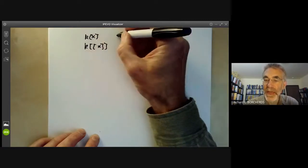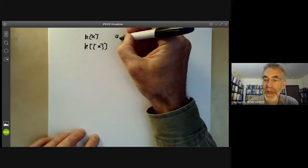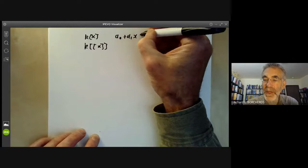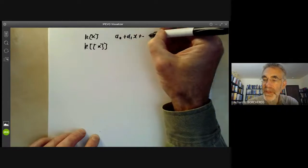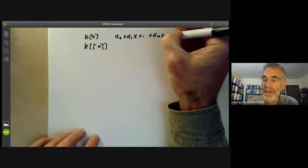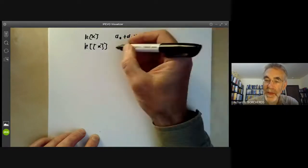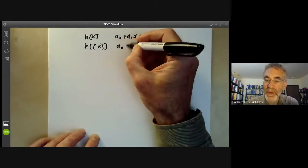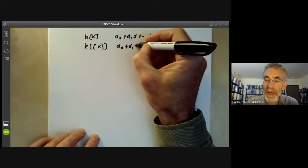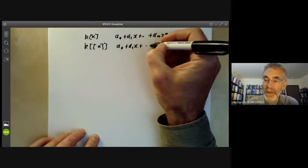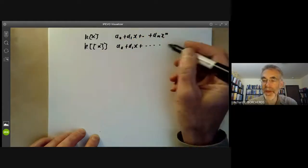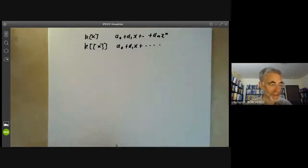Polynomials in k[x] just look like a₀ plus a₁x plus aₙxⁿ. Formal power series look like a₀ plus a₁x and so on — they just keep going indefinitely and don't have a greatest term.